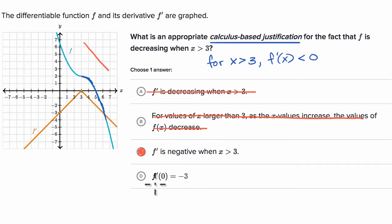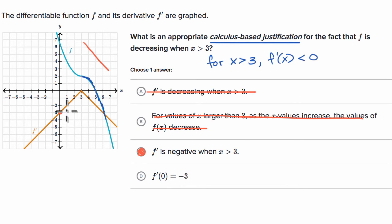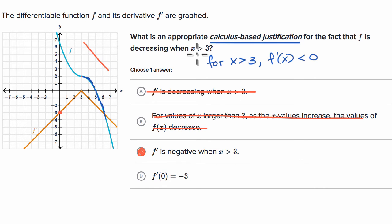The last choice says f prime of zero is equal to negative three — they're just pointing out a specific point that isn't even relative to the interval we care about, when x is greater than three. So we definitely want to rule that one out.